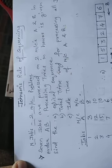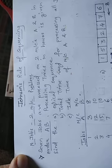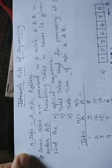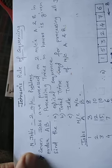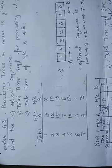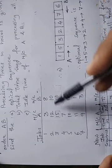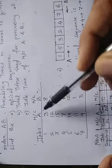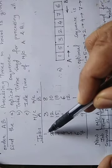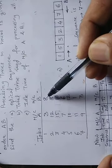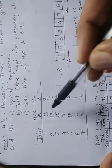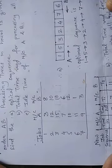The problem states: seven jobs are to be processed on two machines A and B in the order A then B. Note the order given — sometimes it may be B then A, so check carefully. Processing times in hours are given. We have to find the optimal sequence, the total time required for processing all the jobs, and the idle time of machines A and B.